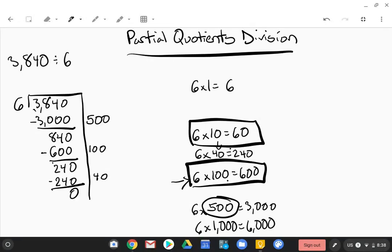So the last thing you're going to want to do is go ahead and add these three partial quotients up: 500 plus 100 plus 40, and it'd be 640. Okay, so 6 goes into 3,840 640 times. You could put that there if you like, or just whatever, just as long as you circle it and you know what your answer is.